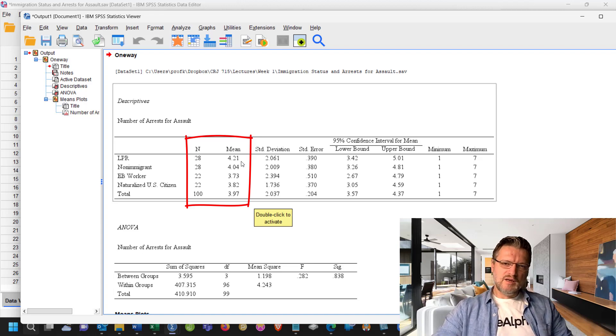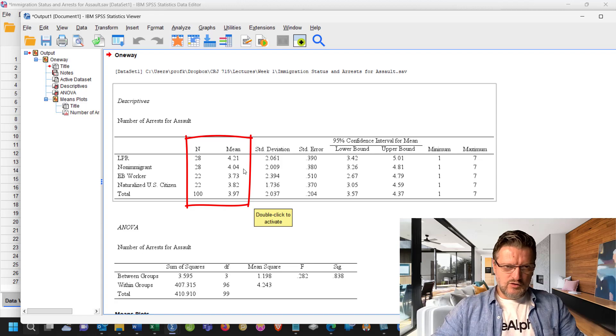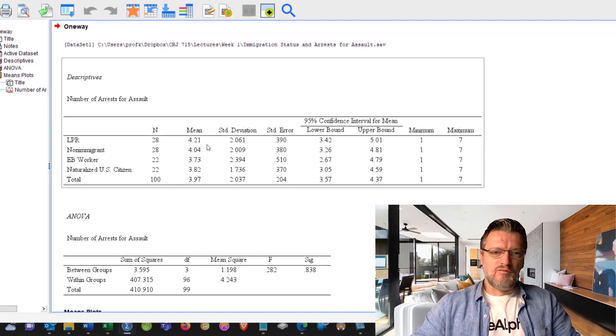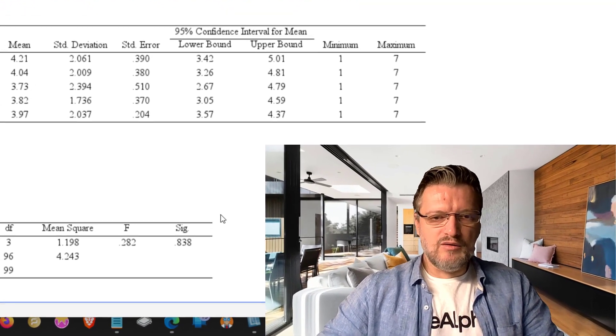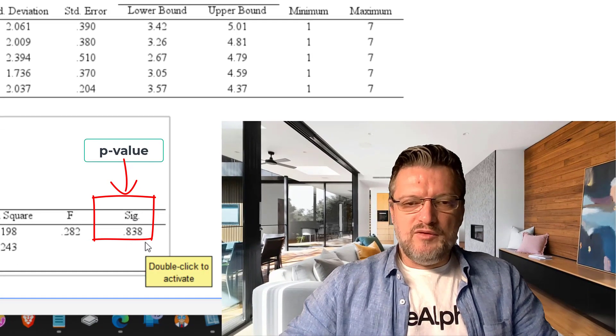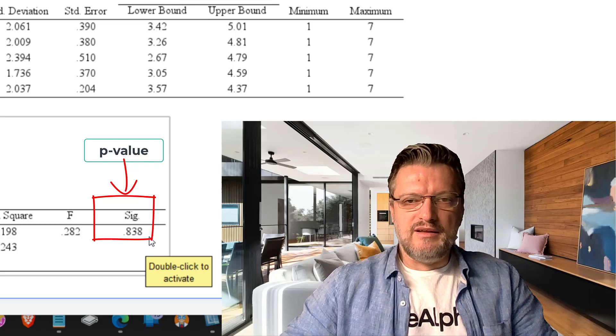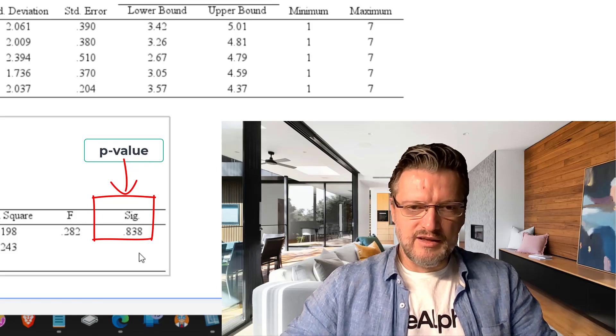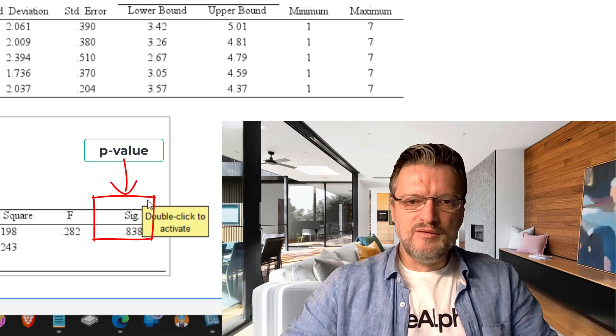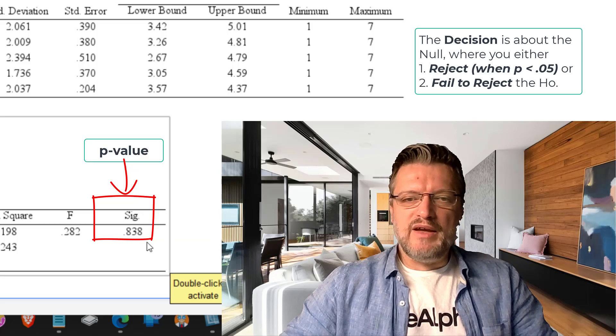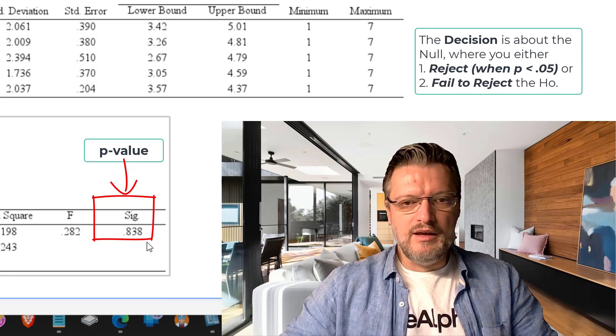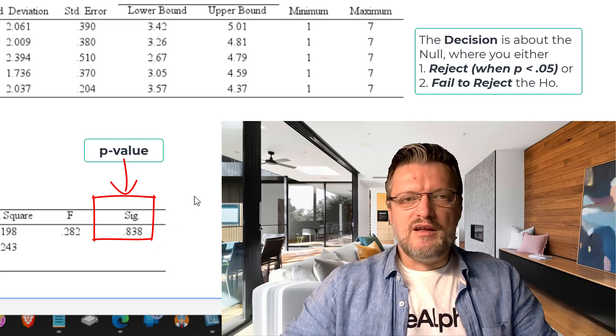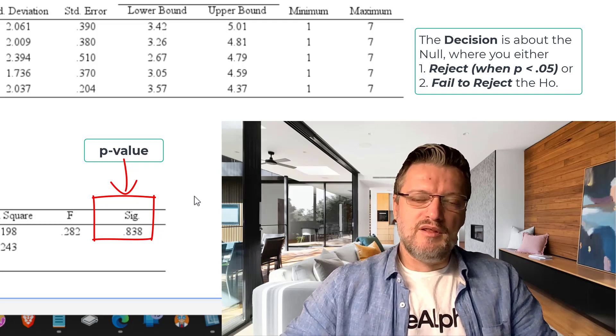Now we see that there is a difference between 4.21 arrests to 4.04 to 3.73 and 3.82. But do we know that these differences are significant so that we can reject the null hypothesis or not? Therefore, we conducted the ANOVA test and the ANOVA produced the p-value. And if you remember from a few slides ago, we said that if the p-value that is produced by the test statistic, and this is the test statistic of the sample, is greater than 0.05, then we fail to reject the null hypothesis.